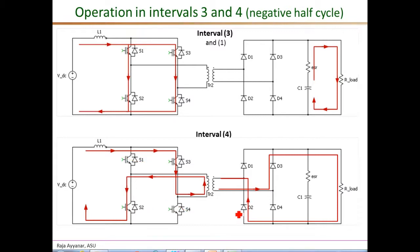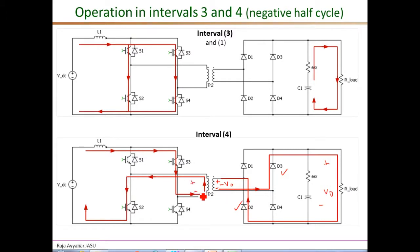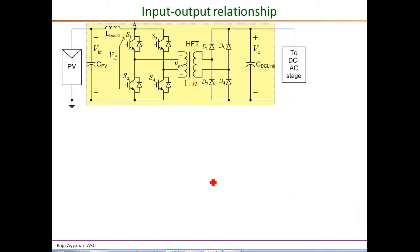With D2 and D3 conducting, the secondary voltage defined with positive at the top is really minus V_o, because the lower end is connected to the positive V_o through D3. Therefore the voltage across the secondary as defined with that polarity is minus V_o, and similarly the V_primary defined in the same way will also be a negative value during interval four.